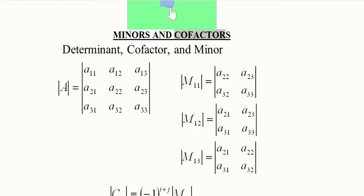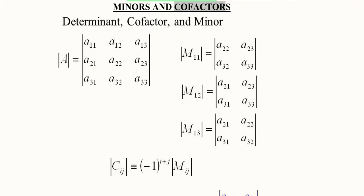M12 is found by dropping the first row and the second column. The remaining elements are a21, a23, a31, and a33, forming the second minor. For the third minor M13, with respect to the third element in the first row, we drop the first row and third column, giving us a 2x2 sub-determinant. These are the minors.